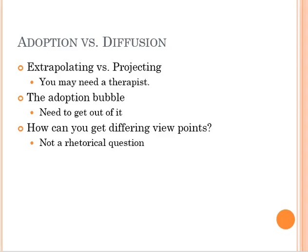If everybody that you talk to thinks it's a great idea, chances are you are going to miss some of the problems that might arise. So you need to get out of the adoption bubble and make sure that you are talking to people who can help you see what some of the problems might be with the innovation. Problems don't mean you shouldn't do it — it just means that once the problems arise, you can control for that. You need to figure out what those objections are and be able to manage them, and when necessary make changes to the innovation you have planned.